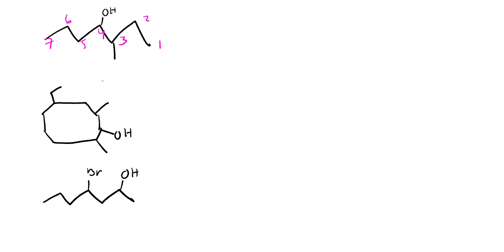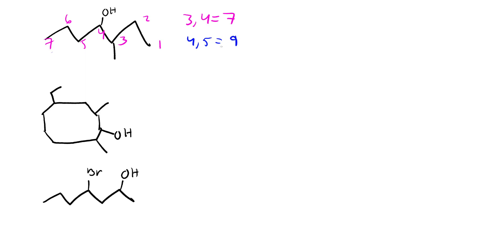An easy way if you get confused about which direction to count: you have something on carbon 3 and carbon 4 going one way - that gives you 3+4=7. Going the other way, you have something on 5 and 4, giving 4+5=9. Since 7 is less than 9, we go on the route that gives 7. We are not going to do the 9 pathway. So we successfully numbered it.